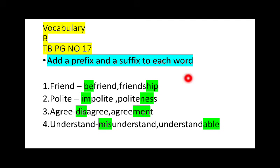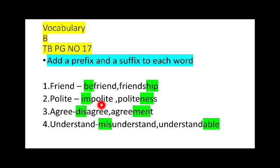Look here. The word is 'friend' — if you add a prefix, it's 'befriend'; if you add a suffix, it's 'friendship.' The next word is 'polite' — if you add a prefix, it's 'impolite'; if you add a suffix, it's 'politeness.' The next word is 'agree' — if you add a prefix, it's 'disagree'; if you add a suffix, it's 'agreement.' The last word is 'understand' — if you add a prefix, it's 'misunderstand'; if you add a suffix, it's 'understandable.'